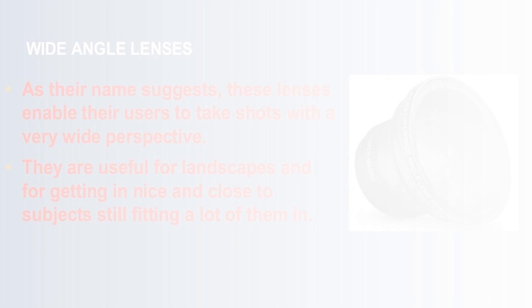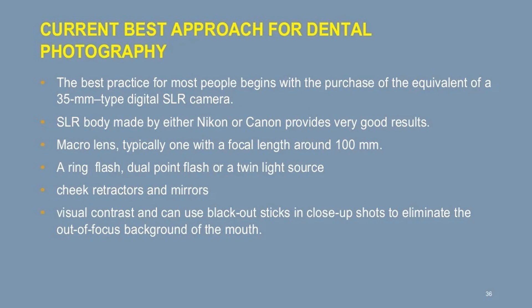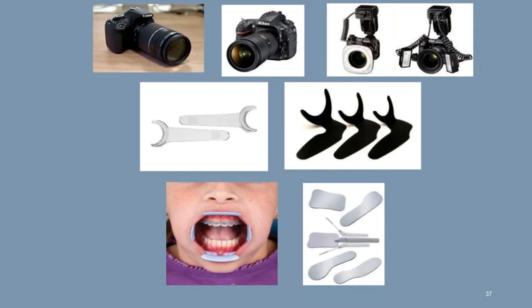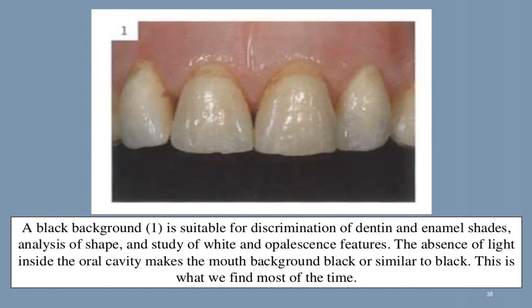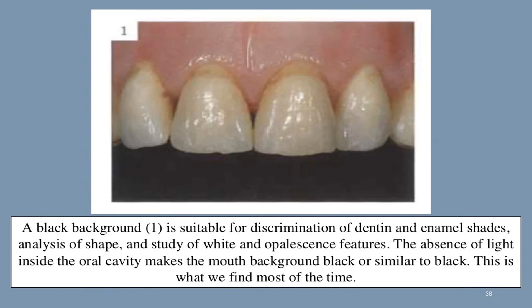The current best approach for dental photography begins with a 35mm-type digital SLR body by Nikon or Canon, paired with a macro lens — typically around 100mm focal length — and a ring flash, dual point flash, or twin light source. Cheek retractors and mirrors are used along with blackout sticks in close-up shots to eliminate the out-of-focus background. A black background is suitable for discrimination of dentin and enamel shades, analysis of shape, and study of white and opalescent features.